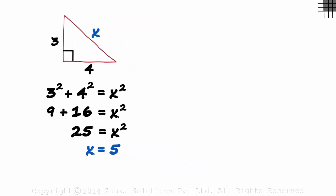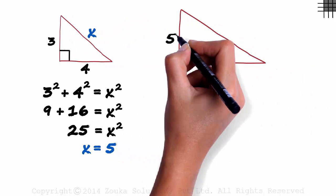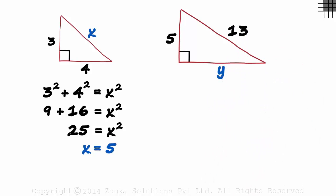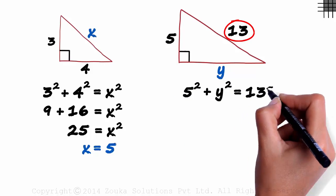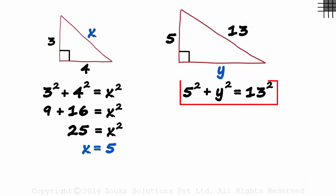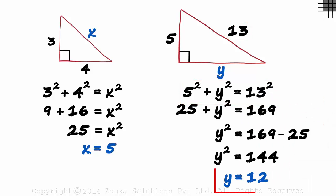Another example would be a right triangle like this with sides 5, Y and 13. Using the Pythagoras theorem in this one we can write 5 squared plus Y squared equals 13 squared. And solving this we get the value of Y as 12.